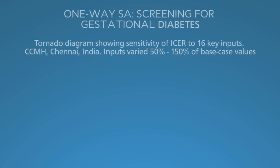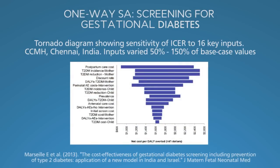Here is an efficient and fun way to summarize one-way sensitivity analysis. It's called a tornado diagram because of the shape. Each horizontal bar indicates the uncertainty in the incremental cost-effectiveness ratio associated with uncertainty in that input — a longer bar means more uncertainty. For this analysis of gestational diabetes screening and treatment, the input value that most affects results is the cost of post-partum care at the top, spanning $900 to $2,400 per DALY averted.